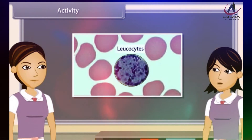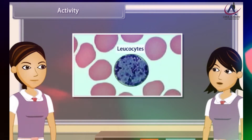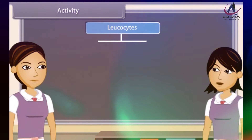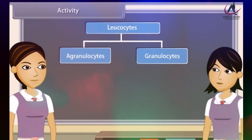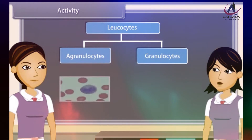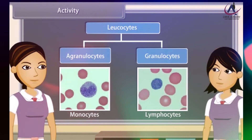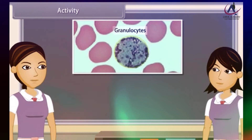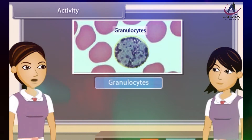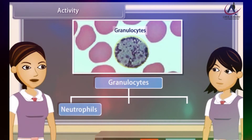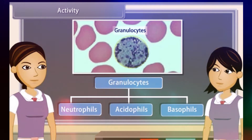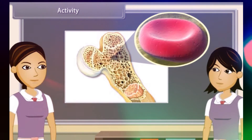Leukocytes are amoeboid, nucleated and whitish; they are larger in size but fewer in number. They are of two types: agranulocytes, without granules and with non-lobed nucleus, which include monocytes and lymphocytes; and granulocytes, containing cytoplasmic granules and lobed nucleus, which are of three types: neutrophils, acidophils and basophils. Blood platelets are minute, enucleated, fragile fragments of giant bone marrow cells called megakaryocytes.